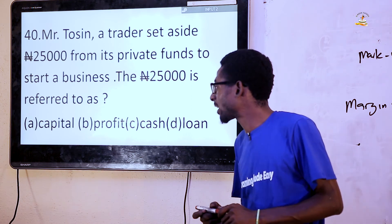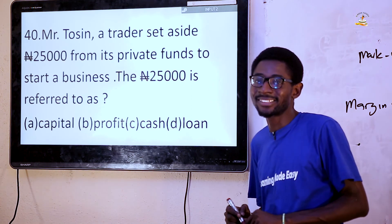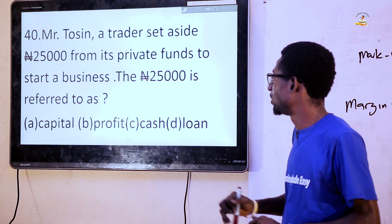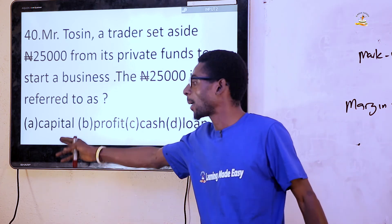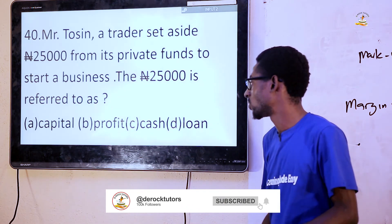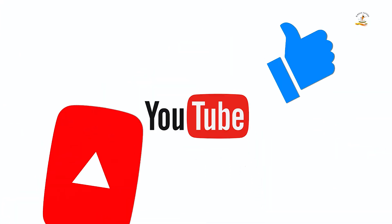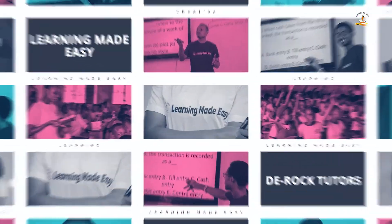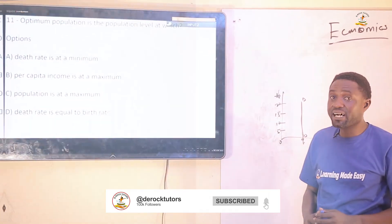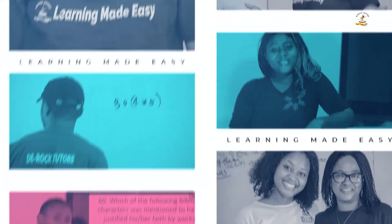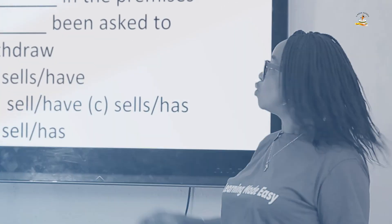Question 40: Mr. Tosi, a trader, set aside 25,000 from his private funds to start a business. The amount brought in is called capital — capital is money used to start a business. The answer is option A, capital.